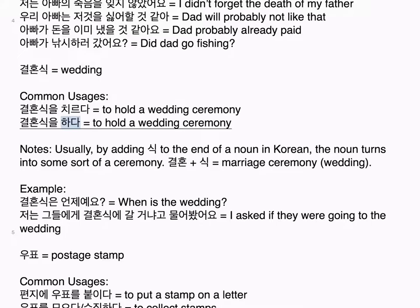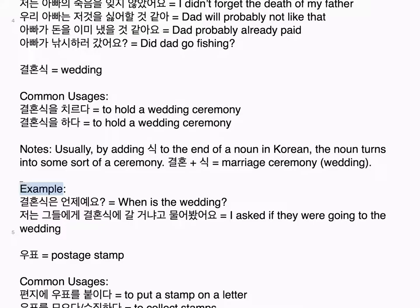결혼식 equals wedding. Common usages: 결혼식을 치르다 — to hold a wedding ceremony; 결혼식을 하다 — to hold a wedding ceremony. Notes: usually by adding 식 to the end of a noun in Korean, the noun turns into some sort of a ceremony. 결혼 plus 식 equals marriage ceremony, wedding. Examples: 결혼식은 언제예요? — when is the wedding? 저는 그들에게 결혼식에 갈 거냐고 물어봤어요 — I asked if they were going to the wedding.